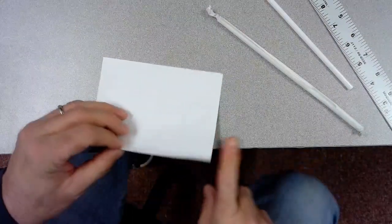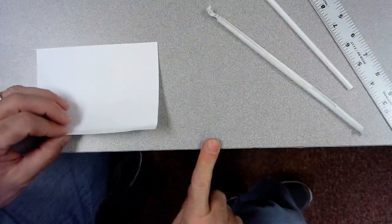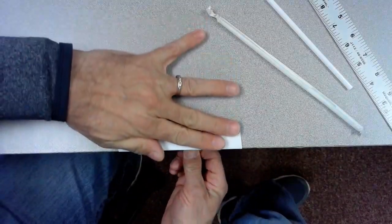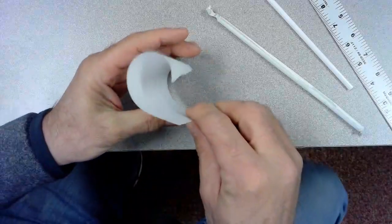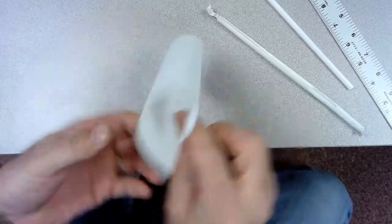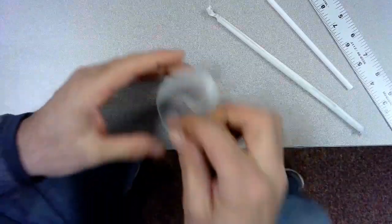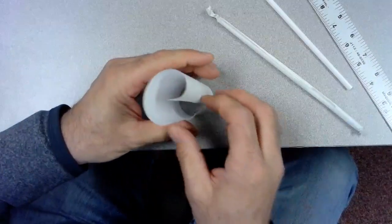You can take the edge of your desk and if you take the paper and you pull down, what you'll do is you'll actually make the paper start to curl. So you can do that on both ends of your paper to start getting it curled like that.